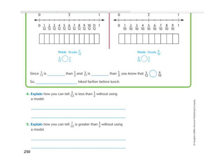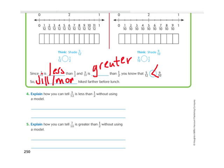So since 5 twelfths is less than 1 half and 9 tenths is greater than 1 half, we know 5 twelfths is less than 9 tenths. That means Jill and her mom hiked further before lunch.